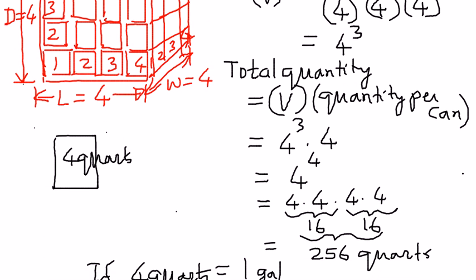Then I wanted to find the total quantity. I took the volume and multiplied by the quantity per can. When I read the label on the can, it said four quarts. So I multiplied four to the power of three — the volume — by the quantity per can, which is four quarts.